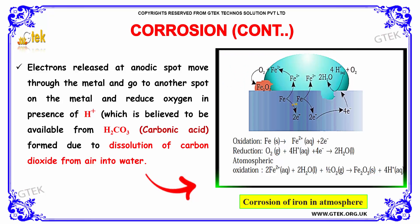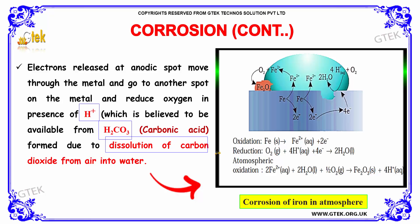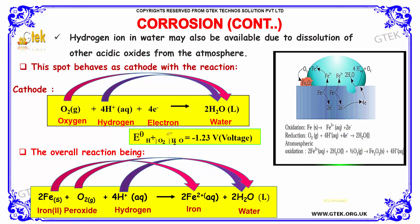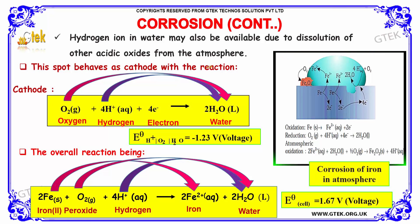The electrons released at the anodic spot move through the metal to another spot on the metal and reduce oxygen in the presence of H⁺ ions, which are available from H₂CO₃ (carbonic acid), formed due to the dissolution of carbon dioxide from air into water. Hydrogen ions may also be available due to dissolution of other acidic oxides from the atmosphere. This spot behaves as the cathode, with the reaction: O₂ + 4H⁺ + 4e⁻ → 2H₂O, and an electrode potential of +1.23 volt.